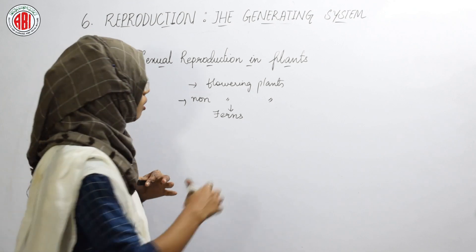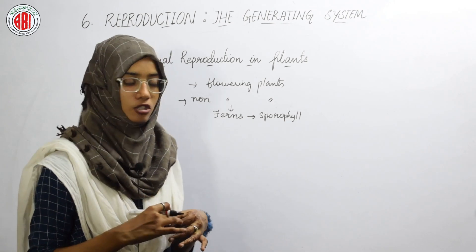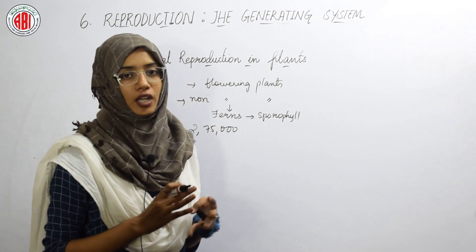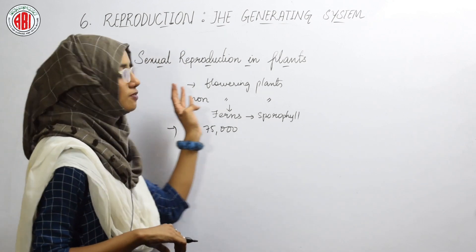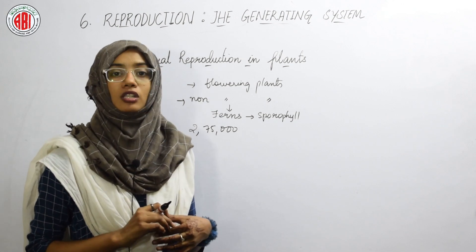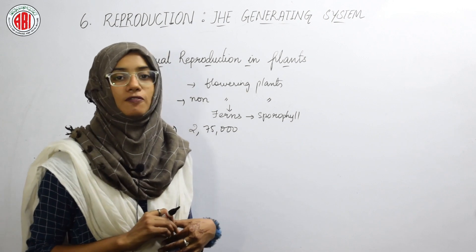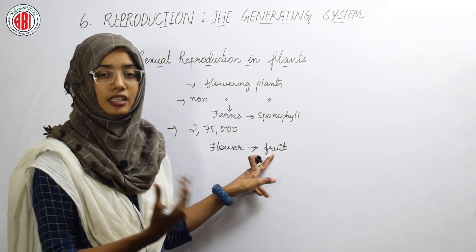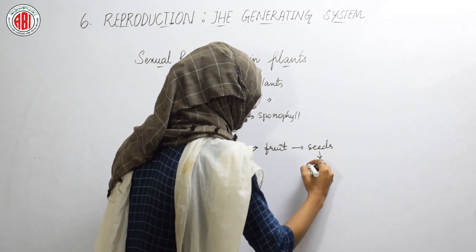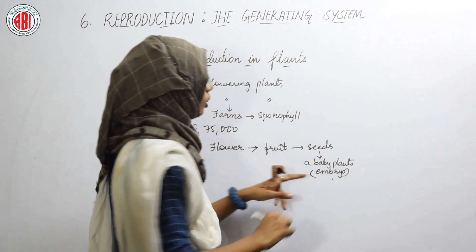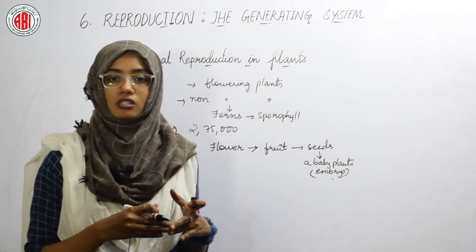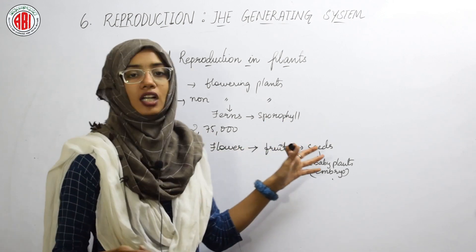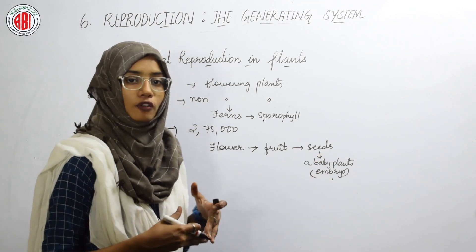Non-flowering plants reproduce by the formation of spores called sporophylls. Flowering plants can reproduce sexually. There are two lakh seventy-five thousand species of flowering plants, showing great variation and diversity. The main aspect of sexual reproduction in flowering plants is the production of seeds. The flower becomes a fruit, and this fruit contains seeds. These seeds contain a baby plant called an embryo, which can grow into a new plant when sown in soil under suitable conditions.